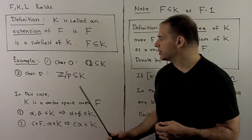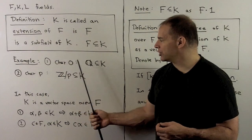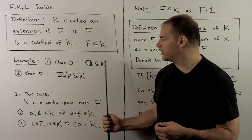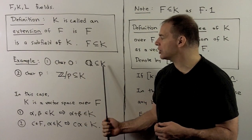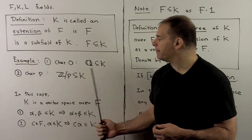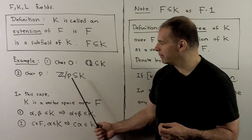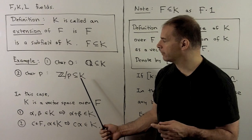For examples: if K has characteristic zero, then K is an extension of the rationals. If K has characteristic P, then K is an extension of Z mod P.